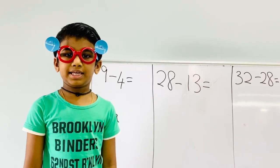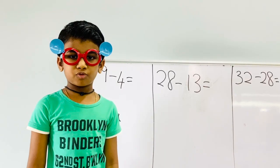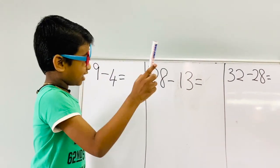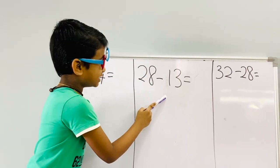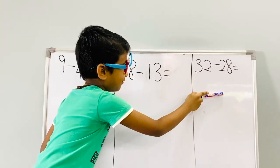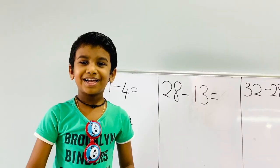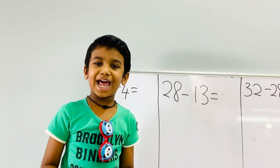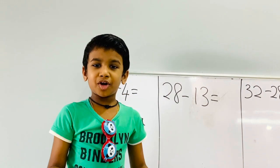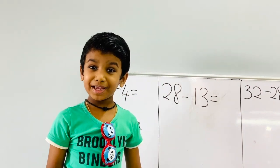I have three sets of questions here: single digit, double digit, and a difficult one. Okay friends, here is my property. Where is your property? Are you ready to learn with me?